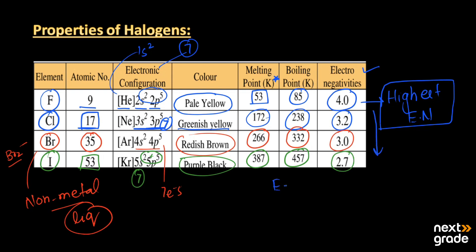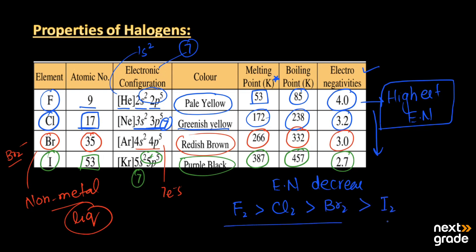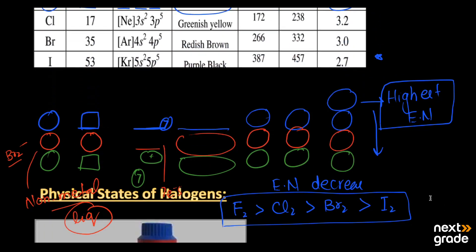We can summarize the electronegativity trend: fluorine has the highest electronegativity, followed by chlorine, then bromine, and then iodine with the lowest. This trend can be used to explain the electronegative character of all the halogens in detail.